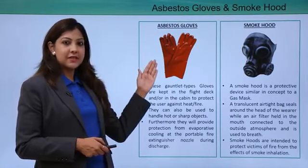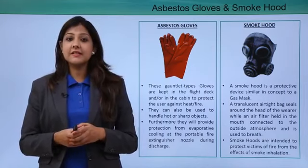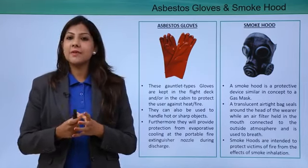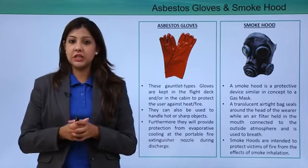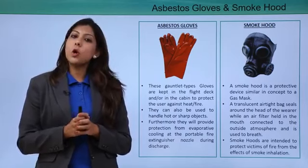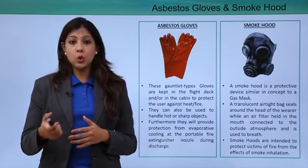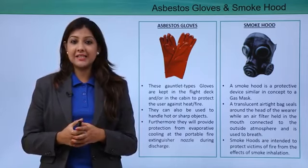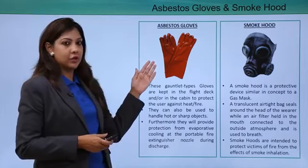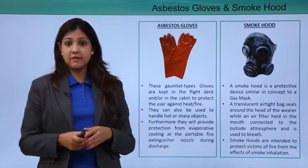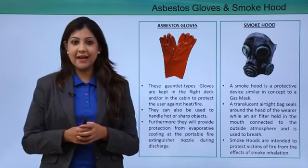Asbestos gloves are located inside the cabin. You wear asbestos gloves when fighting fire to save your hands and body from the fire. They are also used when touching anything hot or cold to protect your hands from burns or frostbite, and they are used to handle any sharp objects that you don't want to touch with your bare hands.